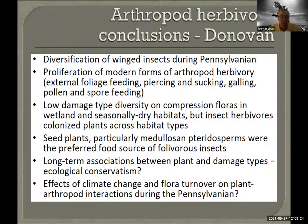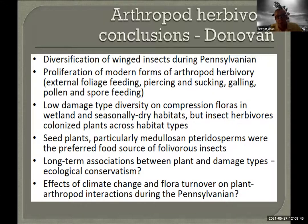Mike's conclusions, and some of this also came from Sandra, showed that there's a big diversification of insects during the Pennsylvanian. I think that record also suffers from the taphonomic megabias — there's a huge amount of Westphalian insects from the coal swamps. We see the proliferation of all sorts of forms of arthropod herbivory that we see today, so in terms of eating plants, arthropods were already way up the curve by Pennsylvanian time.